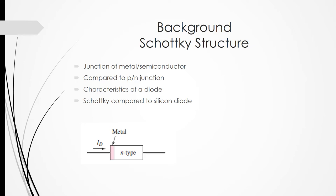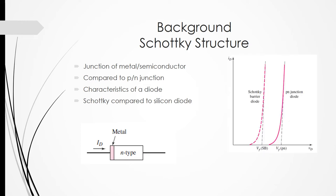When compared to a PN junction, a PN junction current is carried by minority carriers, whereas a Schottky structure current is carried by majority carriers. Also, Schottky structures have a lower turn-on voltage compared to a PN junction, which allows for faster switching. We can see this by these current-voltage characteristics of a Schottky structure compared to a PN junction.